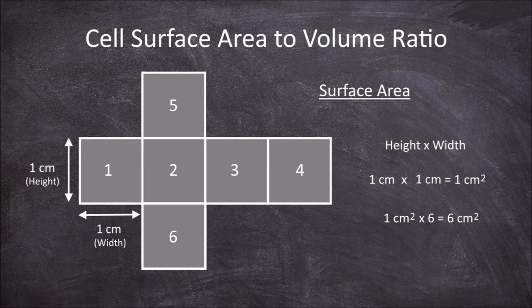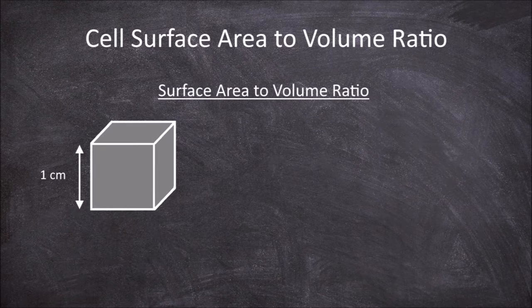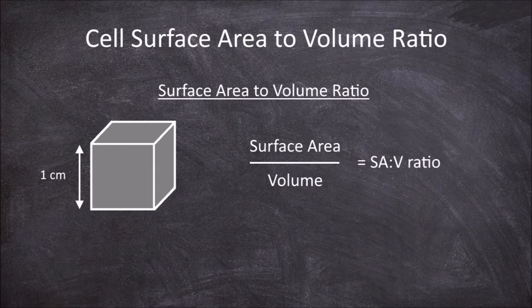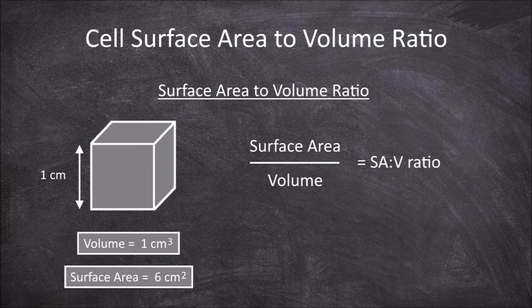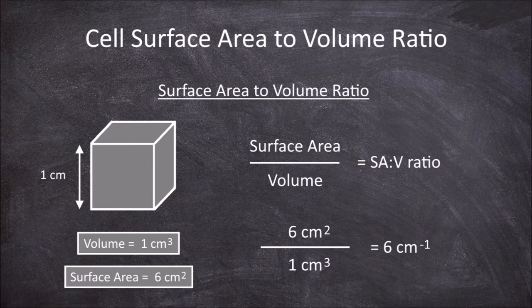To calculate the surface area to volume ratio you divide the surface area by the volume. The volume for this cube was 1cm³ and the surface area was 6cm². So we divide 6cm² by 1cm³, which equals 6cm⁻¹.